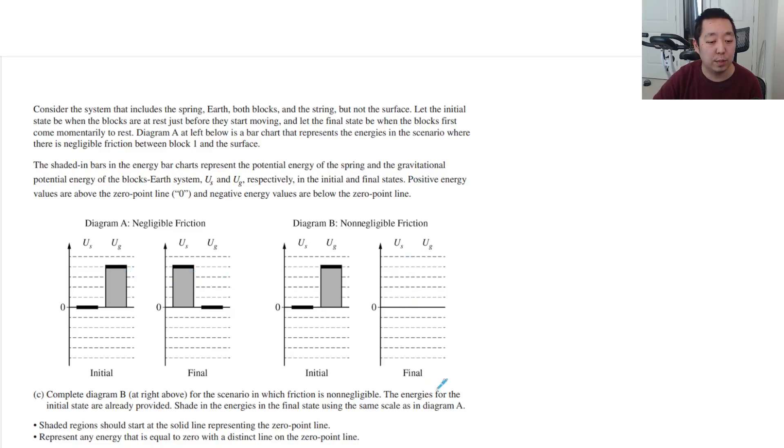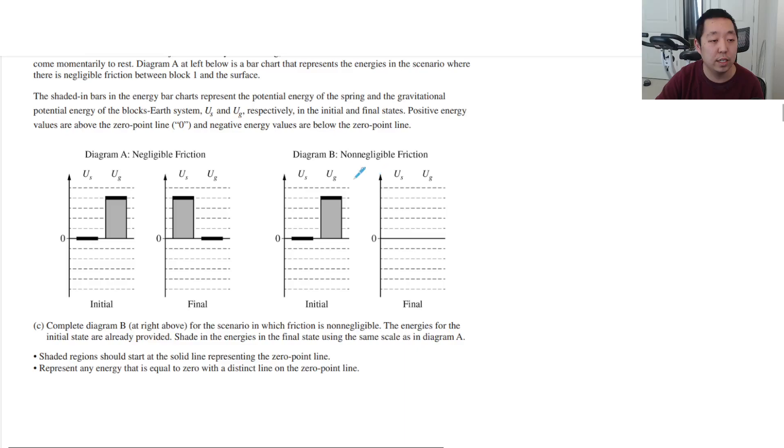So here we conserved energy, but now we have a scenario where it's non-negligible friction. Complete diagram B. So basically, because of friction, it's going to cause a loss in the energy. The spring energy is going, it's still going to stretch, like that.